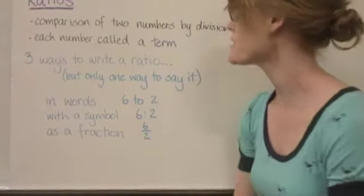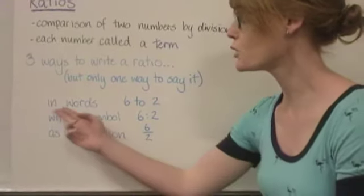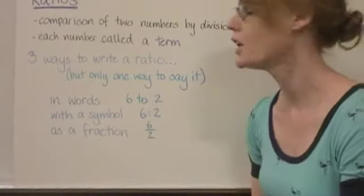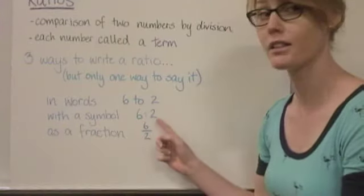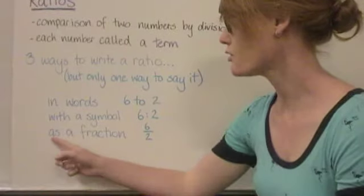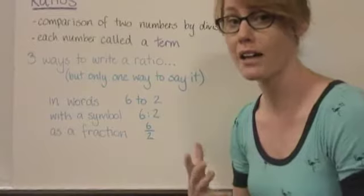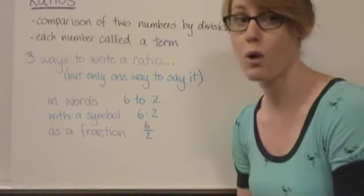There are three ways to write a ratio, but there's only one way to say it. You could write it in words, 6 to 2. You could write it with a symbol, 6 colon 2. And you could write it as a fraction, 6 over 2. But when we actually verbalize the ratio and say it out loud, there's only one way to say it, and that is 6 to 2.